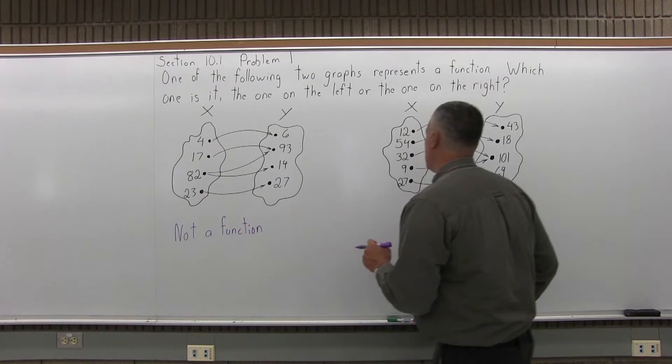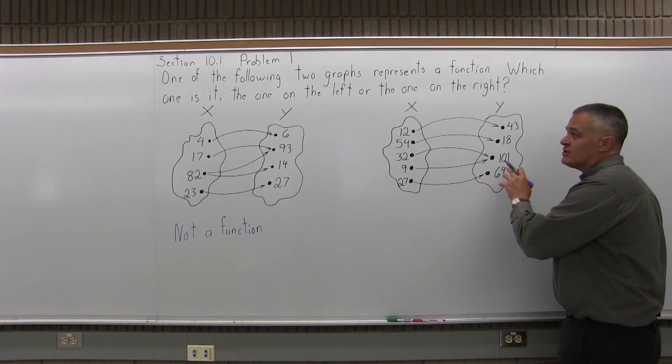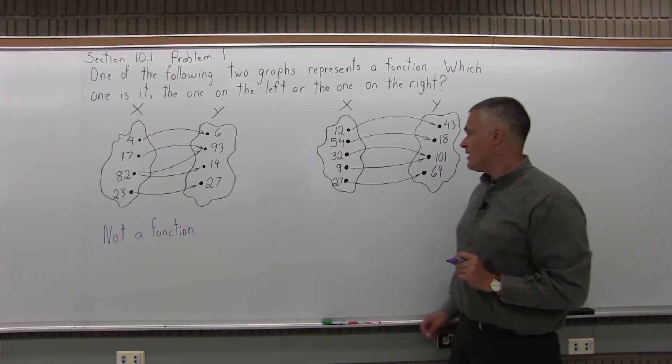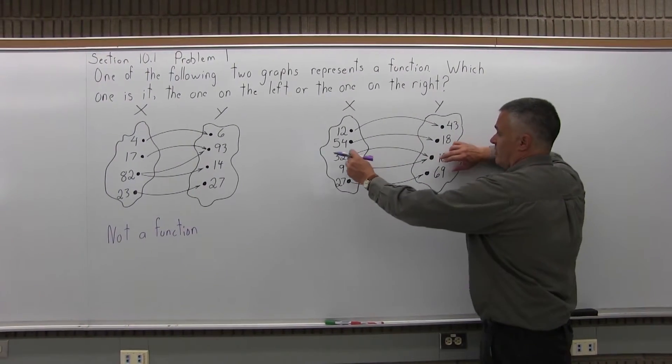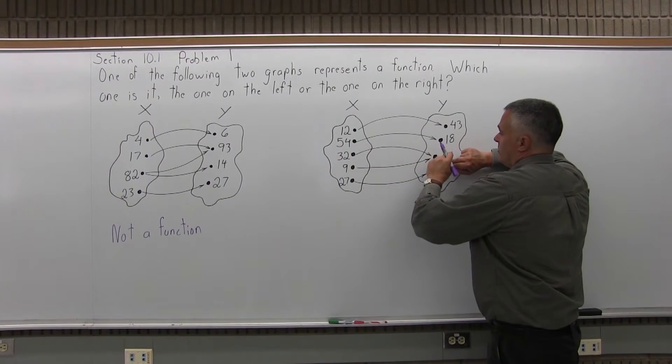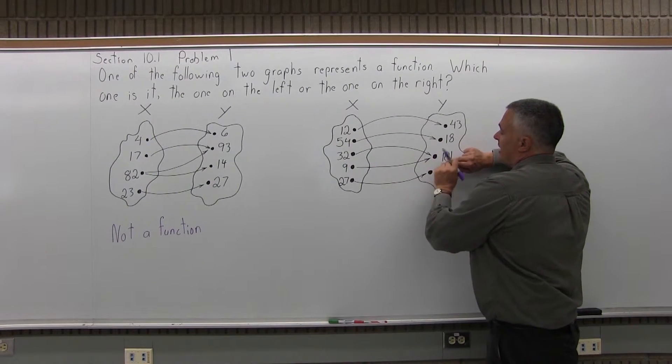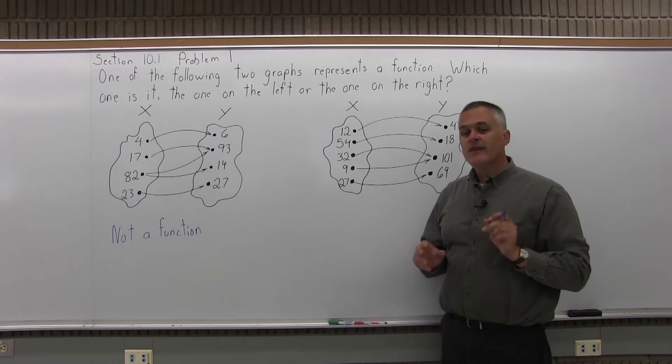Now if you look at the graph on the right, each X goes to only one Y. Now you do have a situation where if you put in a 32, you get out a 101. And if you put in a 9, you also get out a 101. That's okay.